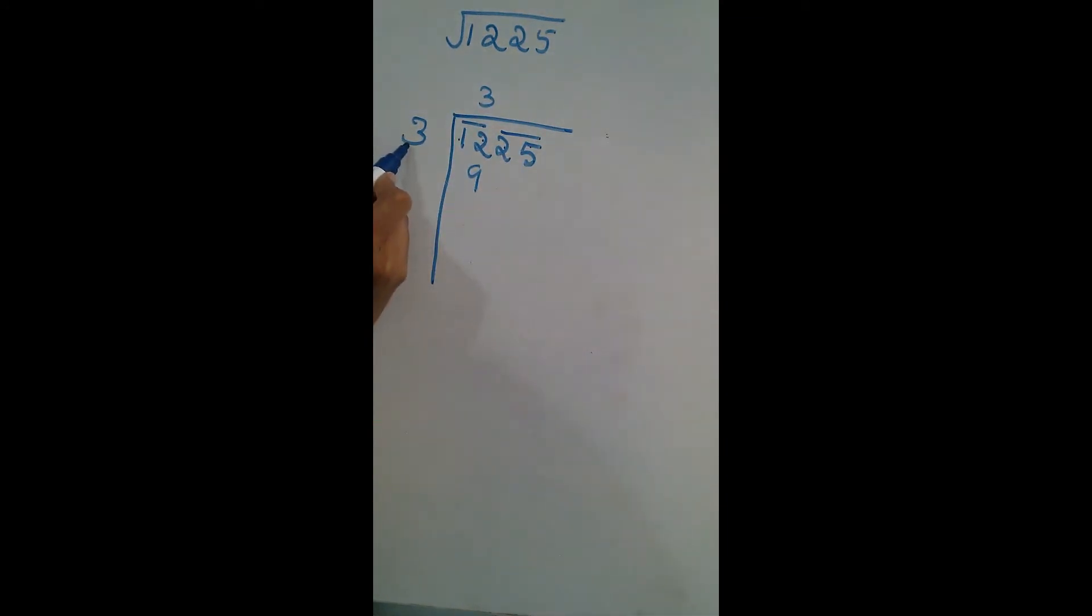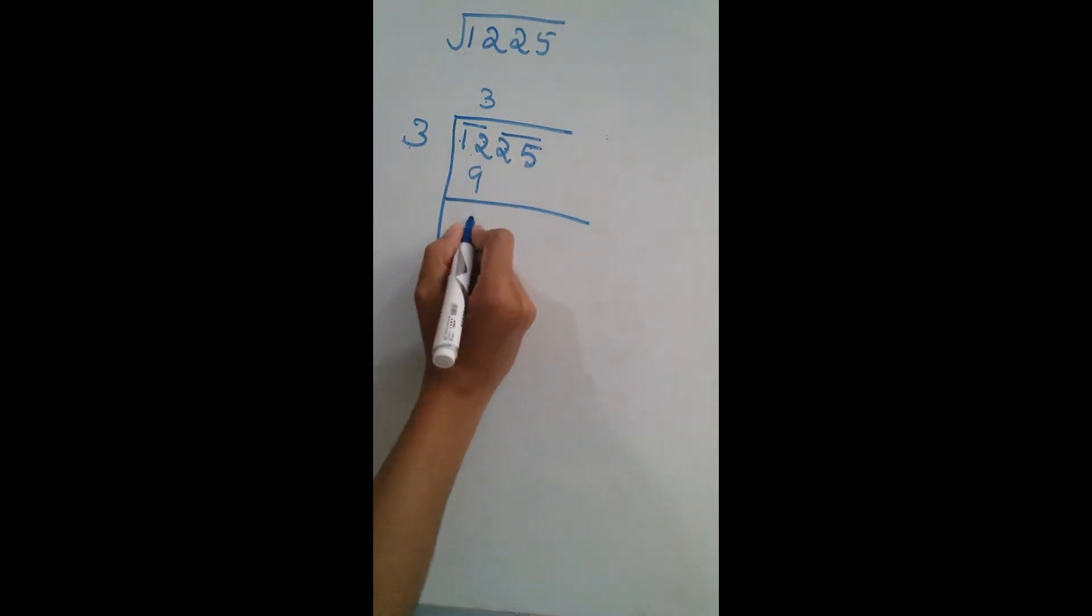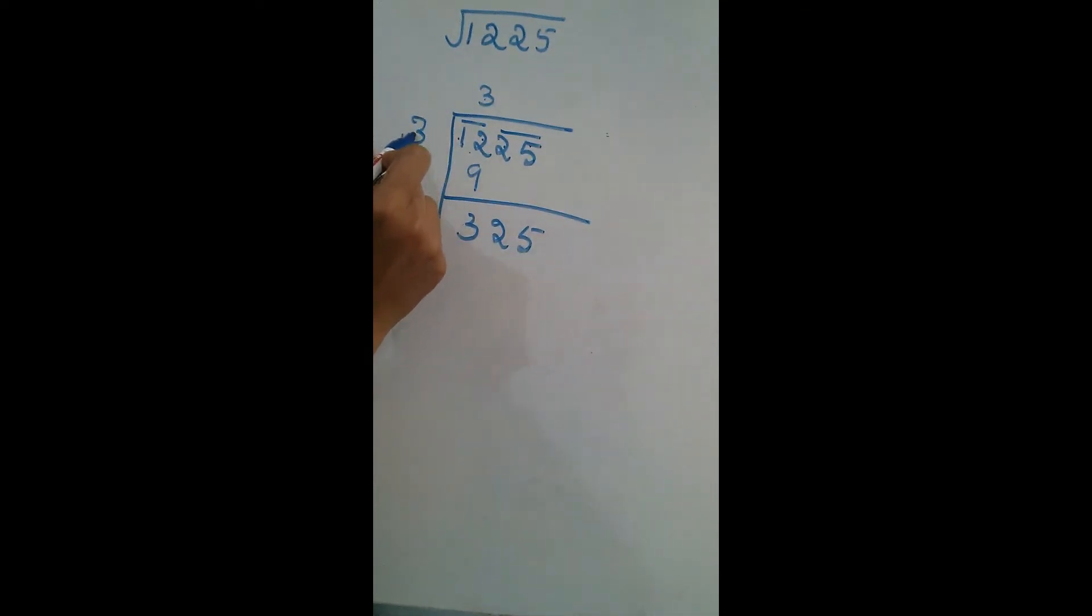That is, whatever we are writing here, it should be the same. If we are writing 4, means here it's 4. That is, 4 squared is 16. But in this case, it's not possible. It's 12 that is given. So 3, 3 squared is 9. Now I am subtracting. 12 minus 9 is 3. I am bringing 25 down.